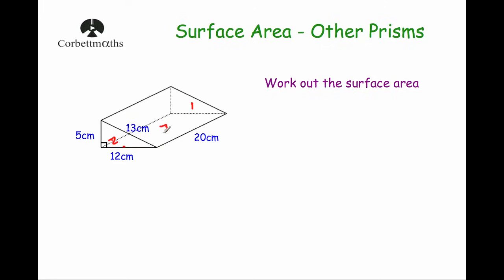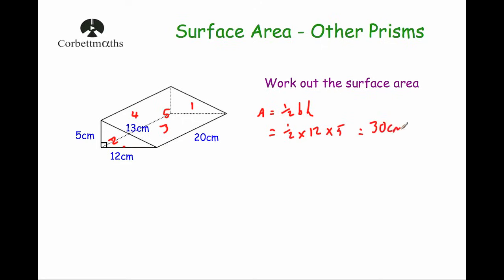Let's call the two triangles faces one and two, the base face three, the vertical rectangle face four, and the sloped one face five. For triangle faces one and two: area of a triangle equals half the base times the height, so that's half times 12 times 5. Half of 12 is 6, times 5 is 30 centimeters squared. So face one is 30 cm² and face two is also 30 cm².